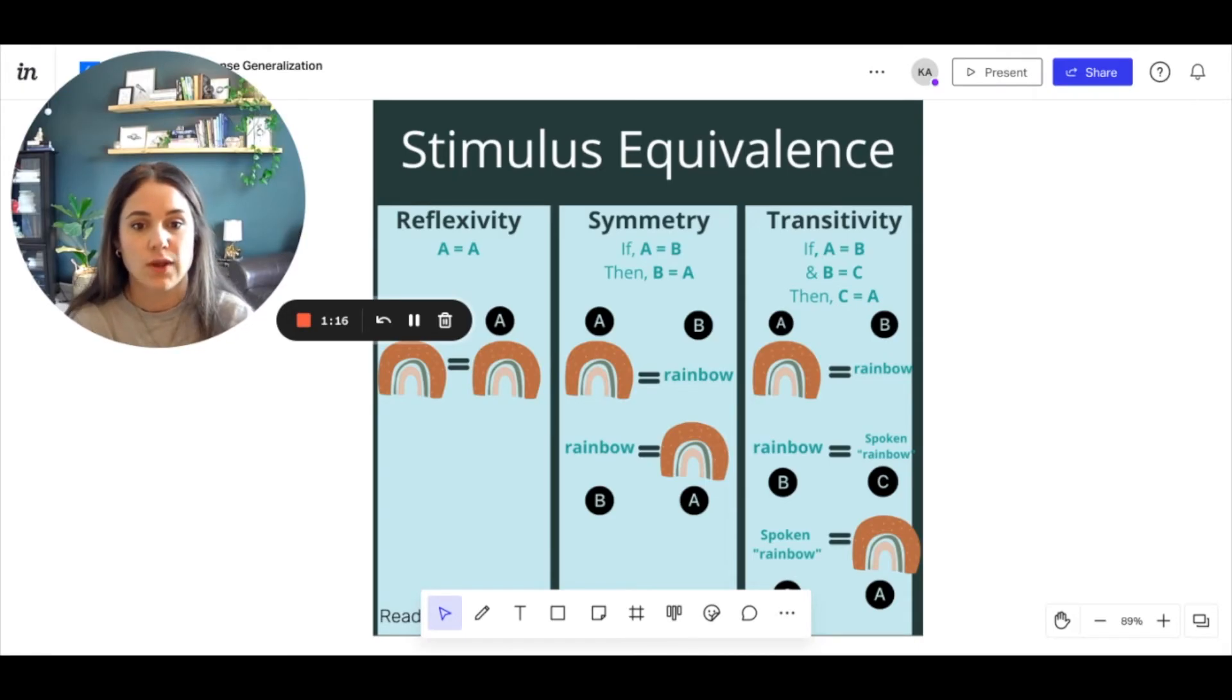or which one, you're able to select the written word, and you're also able to select the picture. So it's the way that these stimuli that are all equal to the same thing can be translated into other ways, whether it's labeling it or receptive identification.